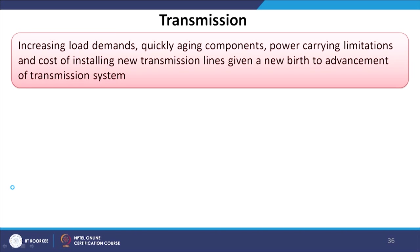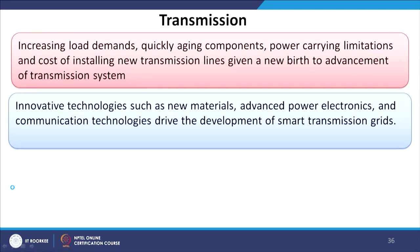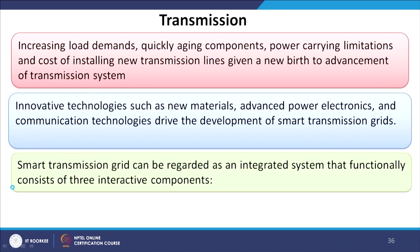Now let us look at how the transmission network is structured and what components exist within the transmission system. The transmission system faces challenges from increasing load demands, quickly aging components, power carrying limitations, and the cost of installing new transmission lines — all giving rise to advancements in the transmission system. Innovative technologies such as new materials, advanced power electronics, and communication technologies drive the development of the smart transmission grid.